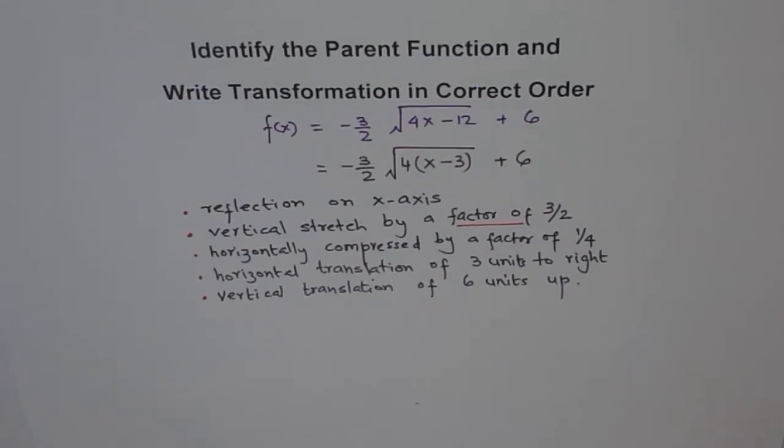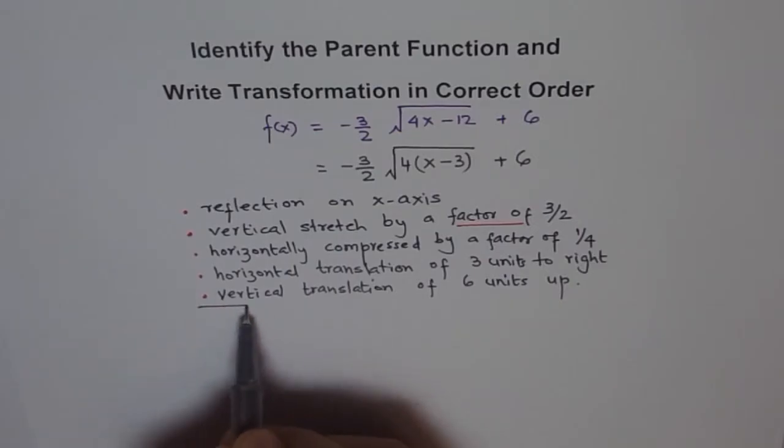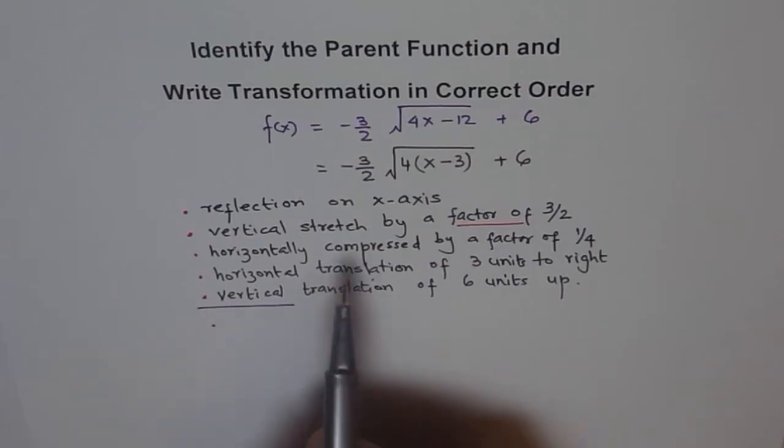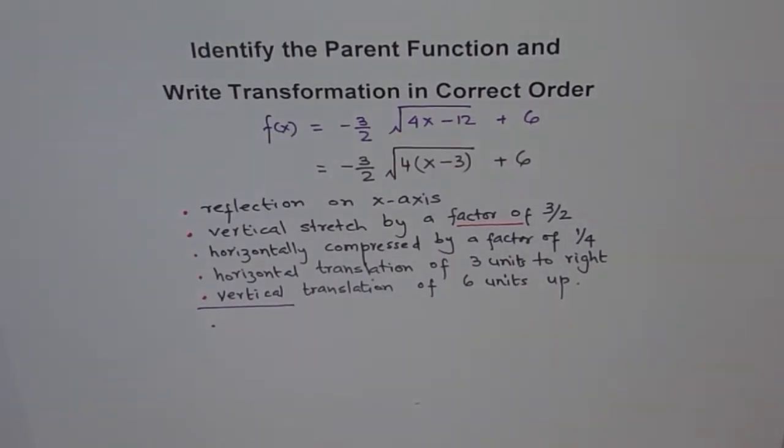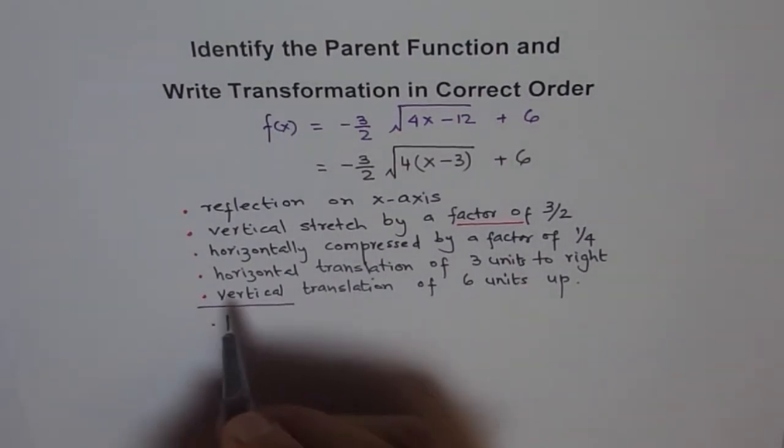We can always change the order. So changing the order, what I am trying to do is trying to give you an alternate way of doing it. So we could write like this also. Instead of writing, we could say horizontally compressed first. So we can say, let me give you an alternate order.